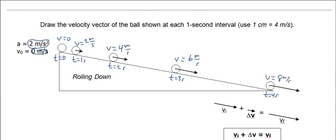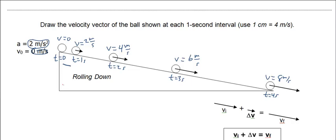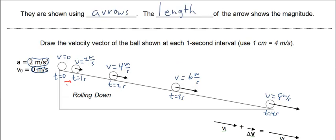Now we're going to bring in a new vector called an acceleration vector. An acceleration vector shows how the velocity vector is changing. I'm going to draw it in red. Because the velocity vector went from zero to 2 meters per second pointing down the ramp, the acceleration vector is going to be pointing down the ramp. Acceleration equals 2 meters per second per second. The length of the acceleration vector I'm drawing is about equal to the amount that the velocity vector grew from one second to the next.